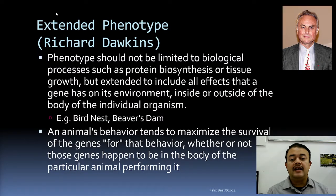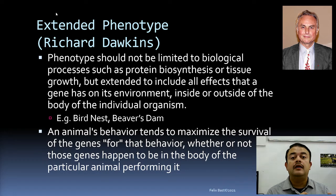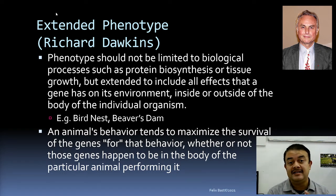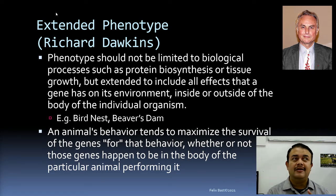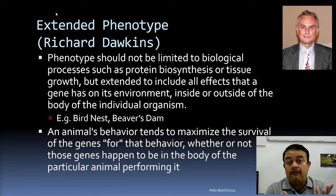An animal's behavior tends to maximize the survival of the genes responsible for that behavior. Whatever behavior the animal performs — like the beaver's dam building or a bird's nest construction — the genes contributing to that behavior get automatically selected if the behavior is selected. This idea applies whether or not the genes happen to be in the body of the particular animal performing it. This is a very unique and profound way of thinking about adaptations, credited to Richard Dawkins.